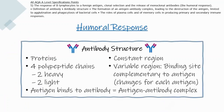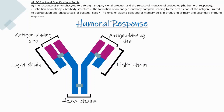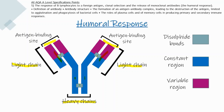Antibodies are proteins with four polypeptide chains — two heavy chains and two light chains. They have a constant region and a variable region, which includes the binding site complementary to the antigen. The variable region changes for each antigen. The antigen binds to the antibody forming an antigen-antibody complex. In the diagram, the two heavy chains are at the bottom, two light chains on the sides, antigen binding sites at the top, disulfide bonds hold all chains together, the constant region is shown in blue, and the variable region in purple.